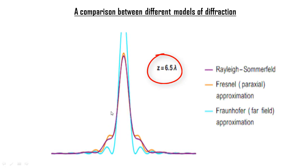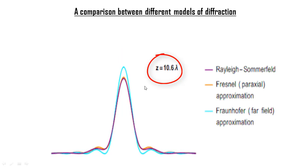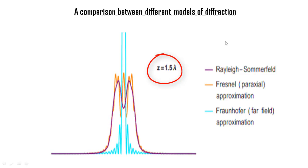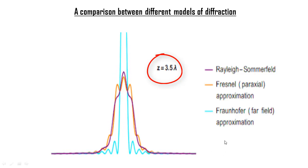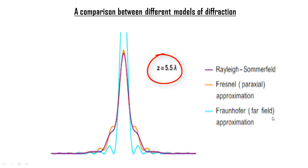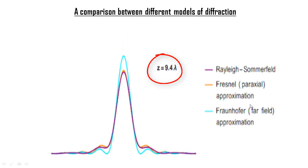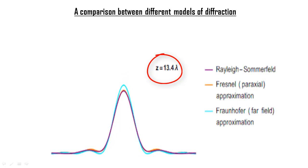The colorful shapes that we see actually show the diffraction pattern that we expect to see on a screen z distance away from the slit. We see that when the size of the wavelength is comparable to the distance z, all the three models predict different patterns. The Rayleigh-Sommerfeld model and the Fresnel model are somewhat similar when the distance z is about four times that of the wavelength lambda.